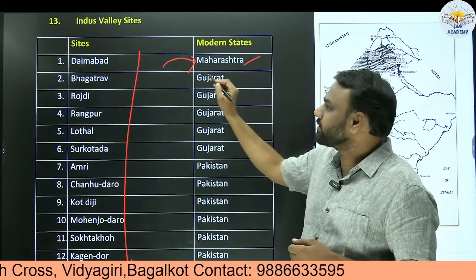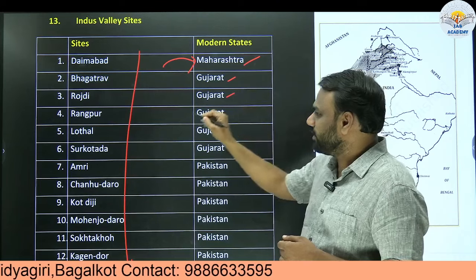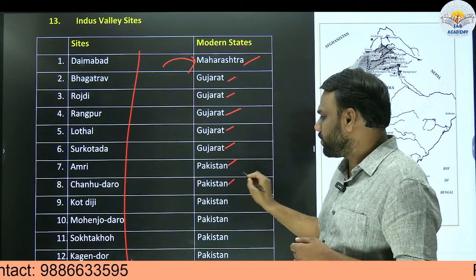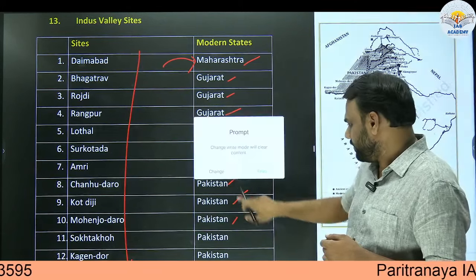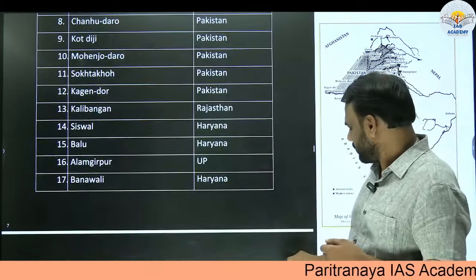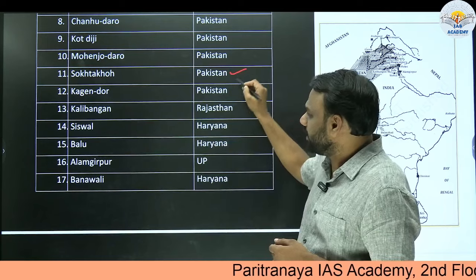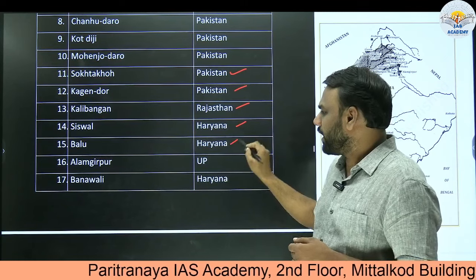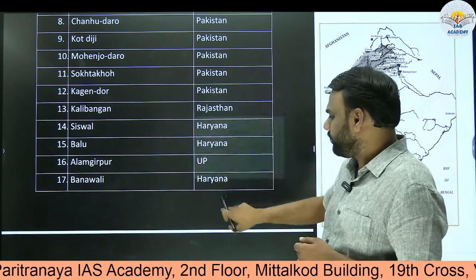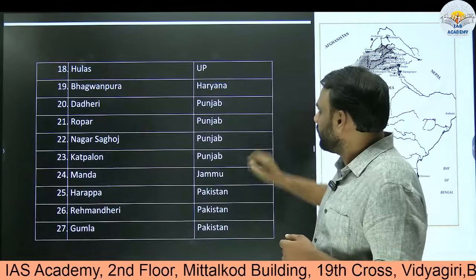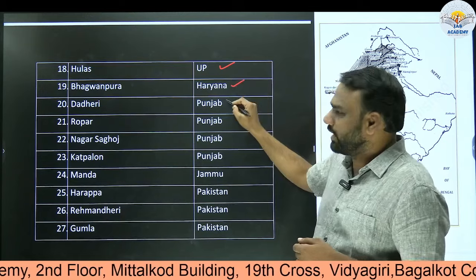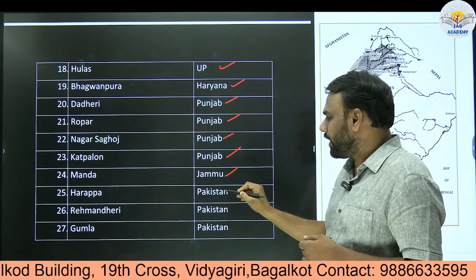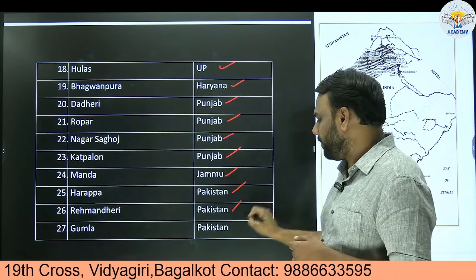Daimabad is in Maharashtra. Bhagat Rao, Rojri, Rangpur, Lothal, and Surkotada are in Gujarat. Amri, Chanhudaro, Kot Diji, Mohenjo-daro, Sokta Koh, Kagandor, Harappa, Rehman Dheri, and Gumla are in Pakistan. Kalibangan is in Rajasthan. Siswal, Baloo, Banwali, and Bhagawanpura are in Haryana. Alamgirpur and Pulas are in Uttar Pradesh. Dhaderi, Rupar, Nagar, Sagoj, and Katpalon are in Punjab. Manda is in Jammu.